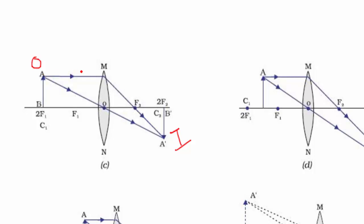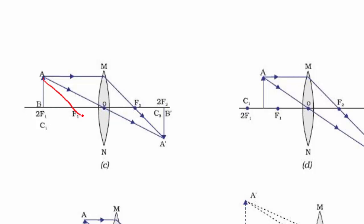We're going to start by drawing a ray parallel to the principal axis. Right in the middle at the lens axis, the ray is going to refract or bend — it goes parallel and then down through F. You can see F1 and F2, and also 2F1 and 2F2. Don't forget to put your arrow on the incident ray and your arrow on the refracted ray.